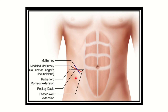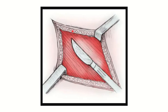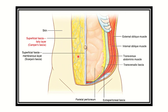Appendectomy is usually performed through this incision. We need to find out which structures should be cut during this procedure. First of all, we encounter the skin and superficial fascia, then the muscle layers which will be cut.